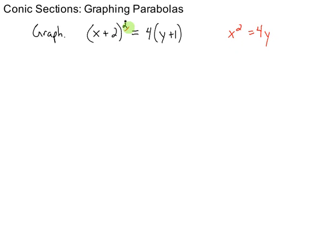However, the x part is still squared and the y part is not. So this is definitely a parabola, and it is vertical because the x is squared. Now the big difference is you can't plug in 0 for x and y anymore. Instead, you want to make this part 0, the x part 0. So in that case, x would have to be negative 2 to make that 0. To make the y part 0, y would have to be negative 1.